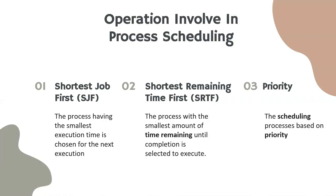The second one is Shortest Remaining Time First, or SRTF, where the process with the smallest amount of time remaining until completion is selected to execute. The last one is priority scheduling, which is the scheduling process based on priority.